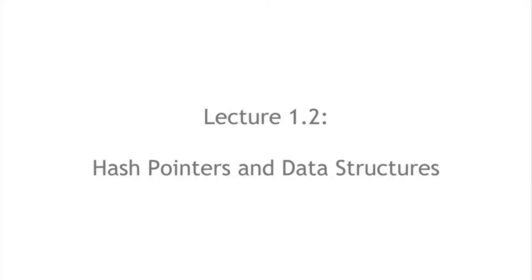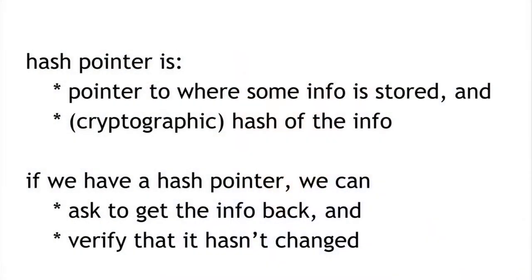In section 1.2, we're going to talk about hash pointers and their applications. A hash pointer is a kind of data structure used a lot in the systems we're discussing. It's a pointer to where some information is stored, together with a cryptographic hash of that information. A regular pointer lets you retrieve information; a hash pointer also lets you verify that the information hasn't changed. So a hash pointer tells us where something is and what its value was.